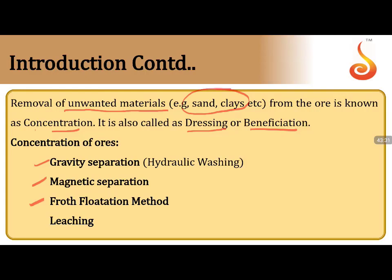Froth flotation works on the difference in wetting nature of ore with respect to oil and water. A frothing agent, froth stabilizers, and collectors are used. Collectors selectively take ore particles into oil while impurities remain in water. The froth carries ore particles and is skimmed off. Leaching involves washing with suitable solvents — commonly seen in aluminium extraction (Bayer's process, Hall's process) and in the cyanide process for silver and gold.